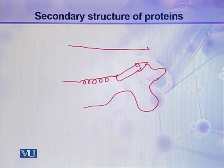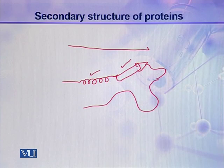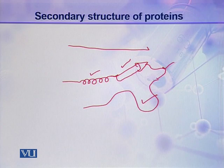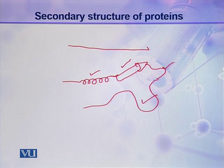Secondary structures include a number of types such as alpha helix, beta sheets, and turns — which include beta turns and gamma turns. It also contains loops like omega loops, and it includes random coils. There are a number of secondary structures which are repeated in the structure of a protein, and all these are local conformational changes in the structure of a polypeptide chain.